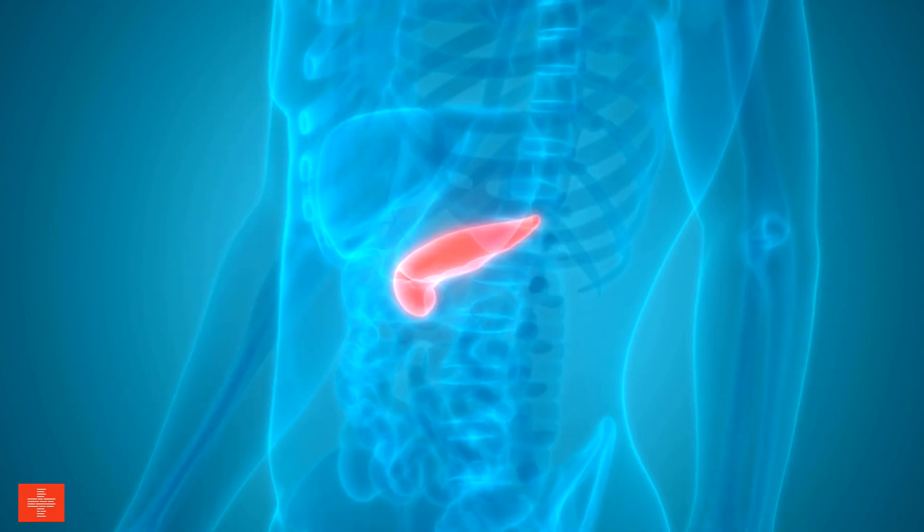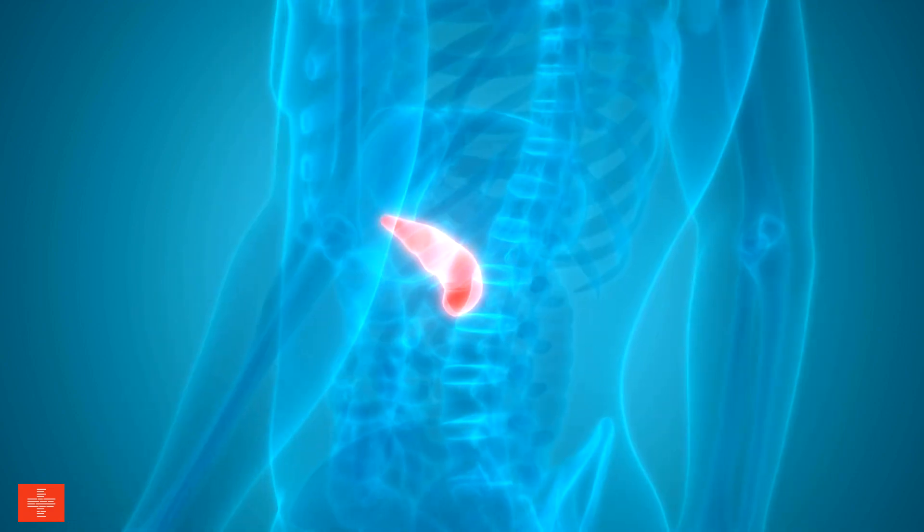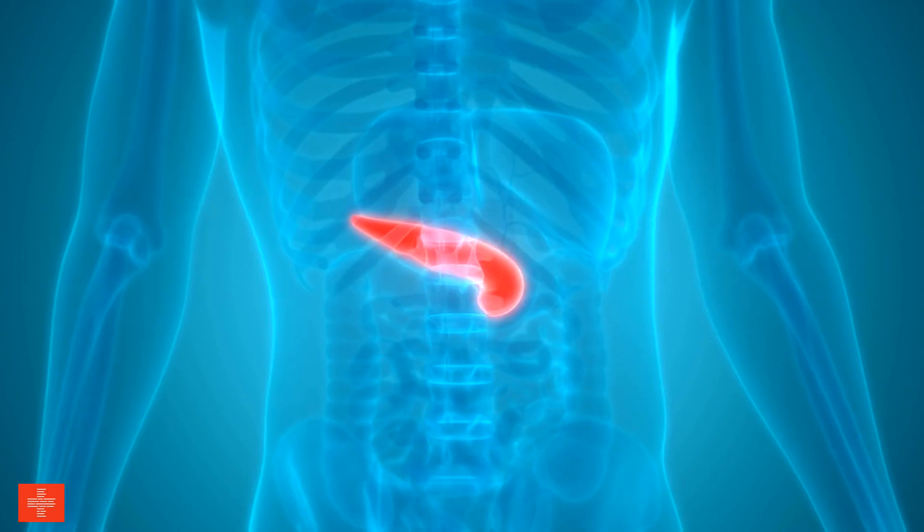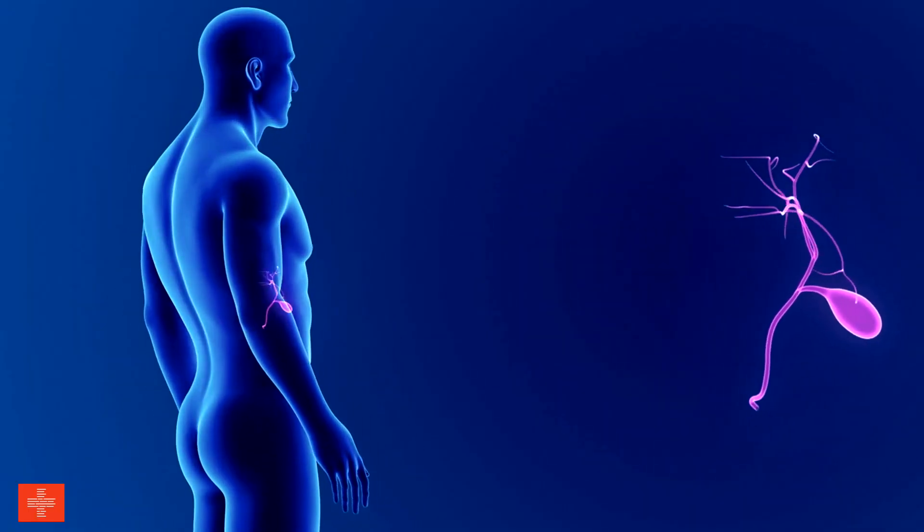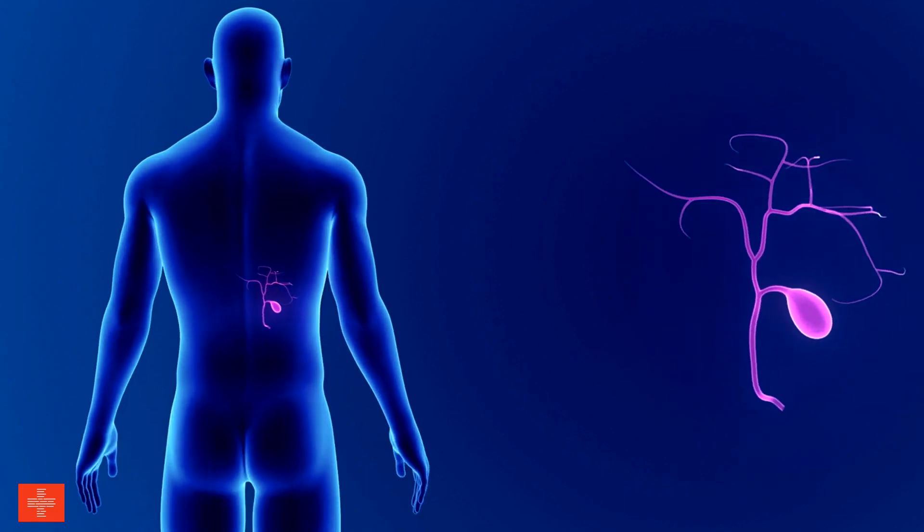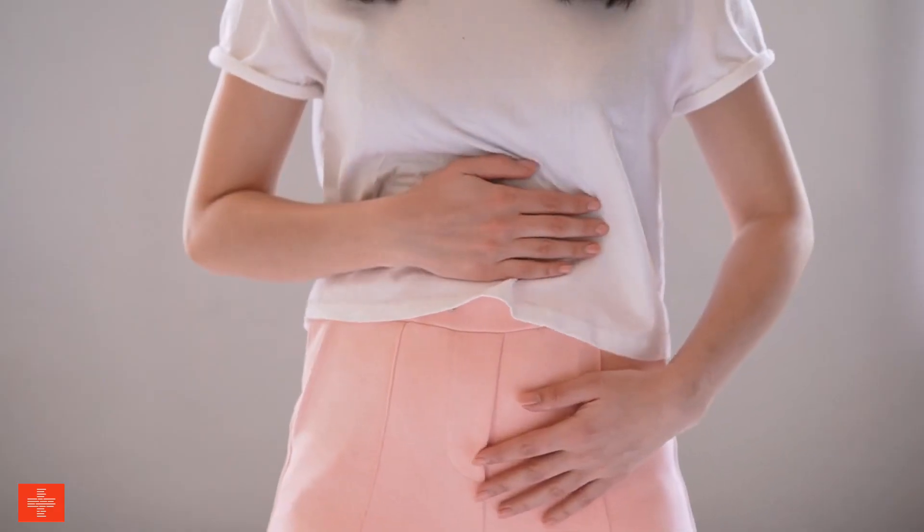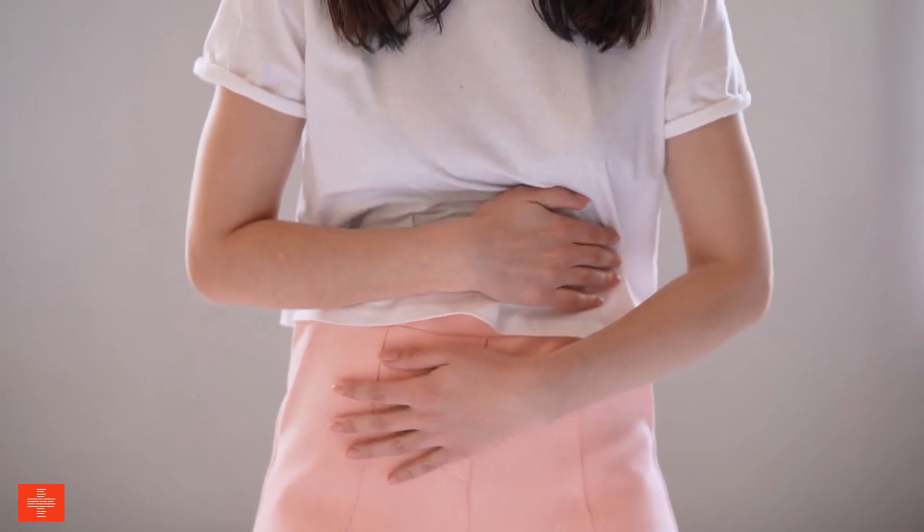Bile, a substance produced by the liver, is also released into the small intestine to help break down fats. Bile emulsifies fats, which means it breaks them down into smaller droplets that can be more easily digested by enzymes. Food can stay in the small intestine for anywhere from 2 to 6 hours.